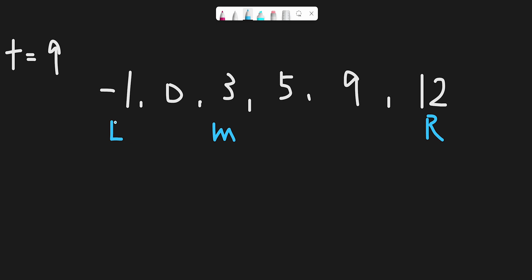In that case, we move the left pointer to middle plus 1. Because we checked this middle number and it turns out it is smaller than the target, so we don't have to care about it anymore — that's why middle plus 1. Repeating the same process, now left pointer is 3 and right pointer is 5, so the middle point should be index 4. We compare target and middle number and they are the same, so we return 4.